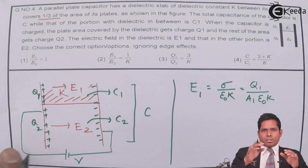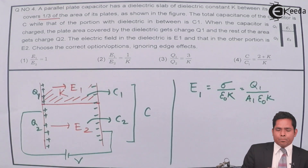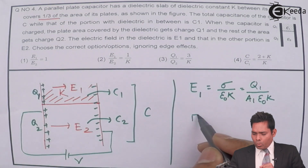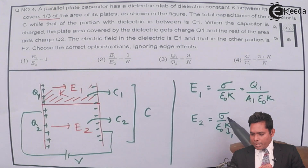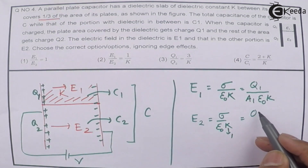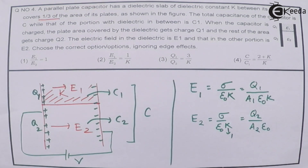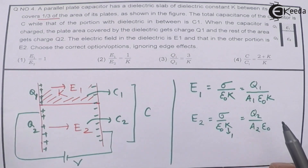For the lower two-third region which has no dielectric, K = 1, so E2 = σ / ε₀ = Q2 / (A2 · ε₀). We then take the ratio E1/E2 by dividing the two expressions. The ε₀ terms cancel out, and we are left with E1/E2 = (Q1/A1) × (A2/Q2) × (1/K).